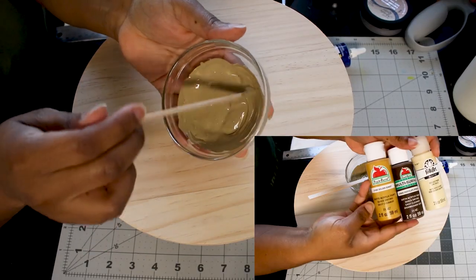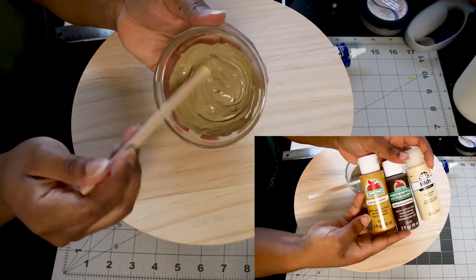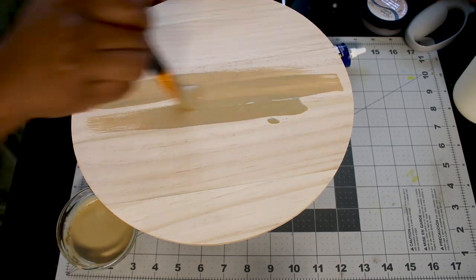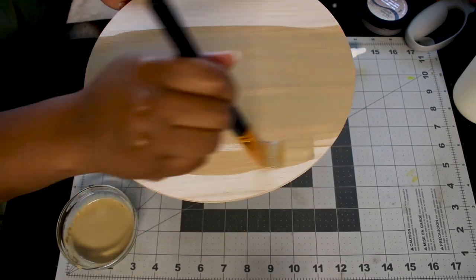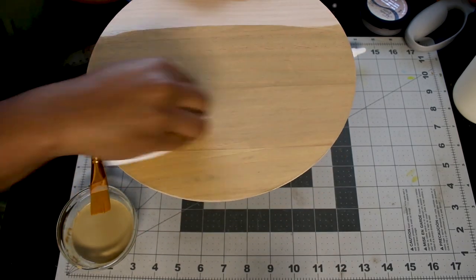And to give the wood a more muted tone, I mixed up some acrylic paints and watered it down to make a paint wash. And this color turned out beautiful.